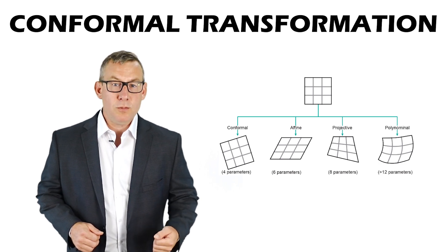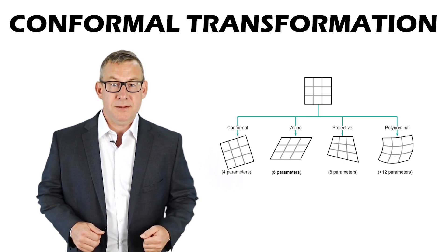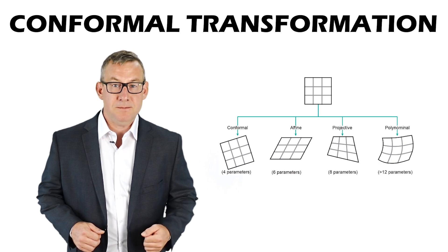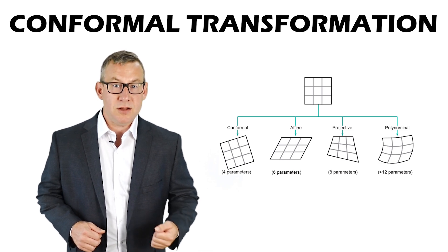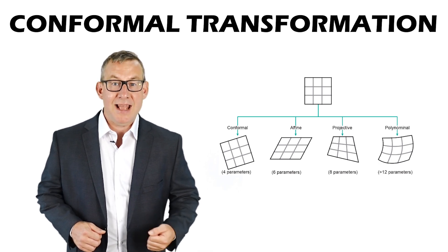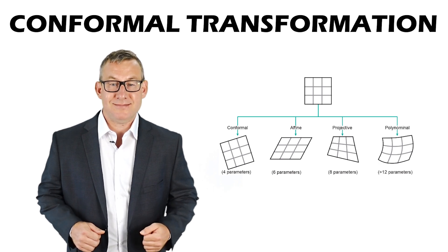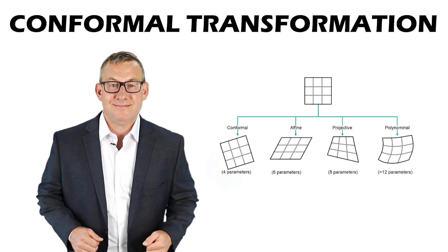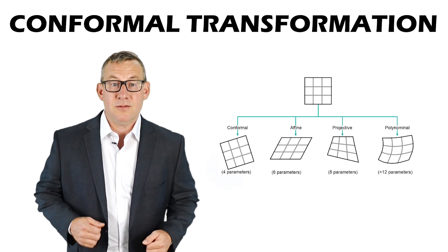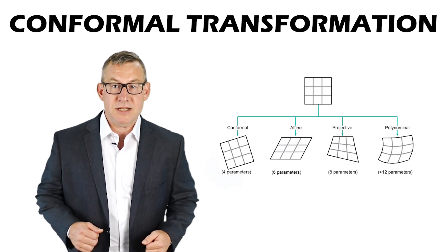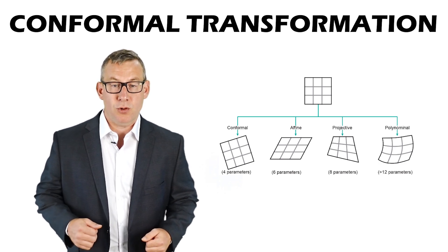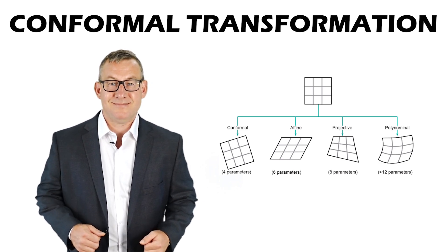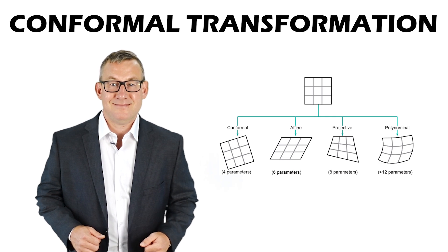A conformal transformation is a first-order polynomial transformation that requires equal scale changes in the x and y directions. A conformal transformation requires only two control points.